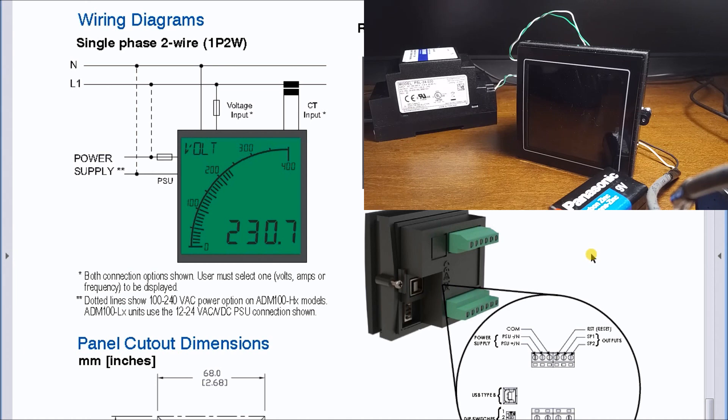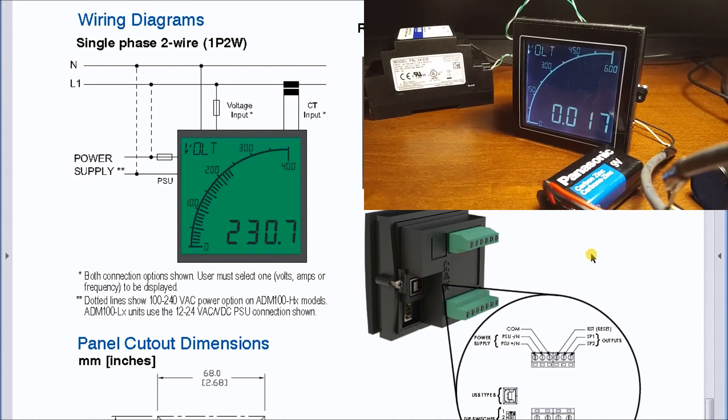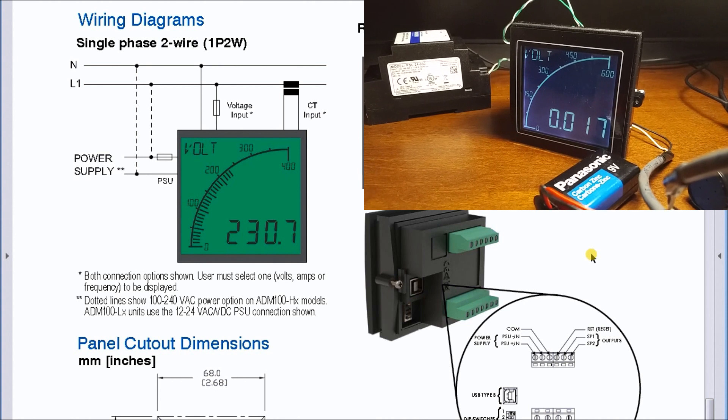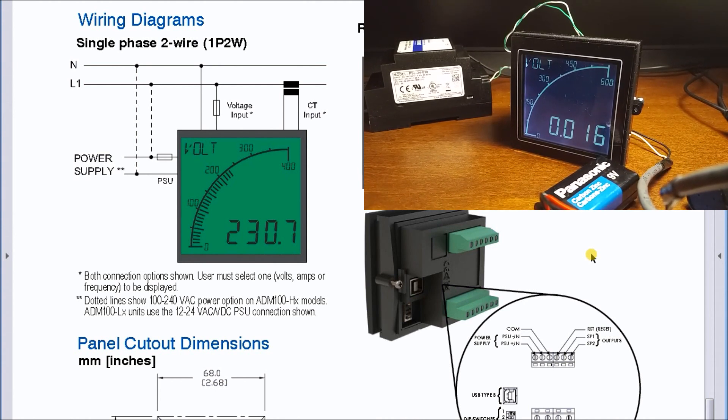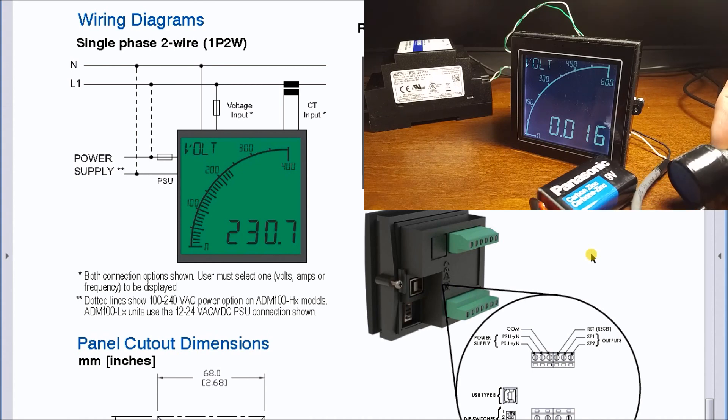And this is the default values that we'll see here. There we go, so there's our display. We're displaying our voltage right now, which is defaulted, and you see it goes from 0 to 600.